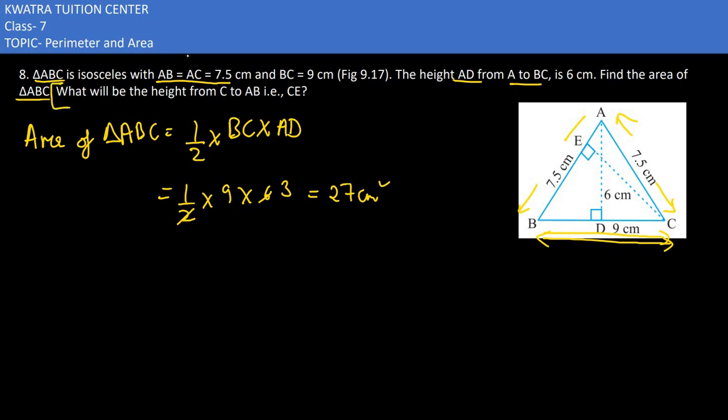In the second part they are saying what will be the height from C to AB, that is CE. Now we have to find the height CE. And with respect to CE, the base is - what is this height perpendicular to? AB.